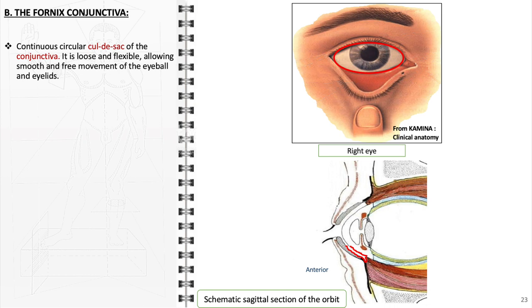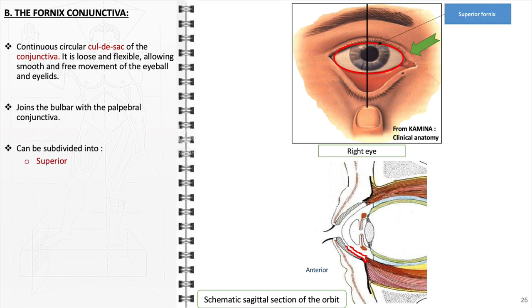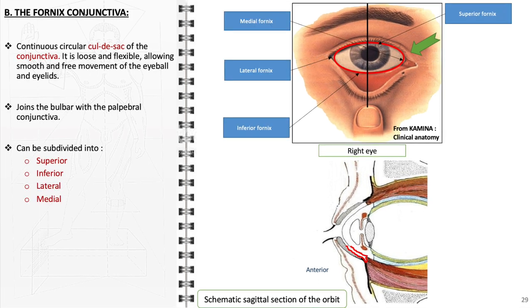The fornix conjunctiva represents a crucial anatomical structure, forming a continuous, circular cul-de-sac that bridges the gap between the palpebral and bulbar conjunctiva. Its loose and flexible nature is essential for the smooth and unrestricted movement of the eyeball and eyelids, facilitating a full range of motion without discomfort or irritation. This segment is anatomically differentiated into four subdivisions: the superior, inferior, lateral, and medial fornices, each contributing to the overall functionality of the ocular conjunctiva.